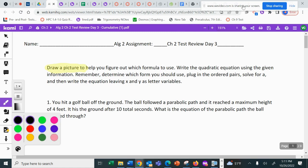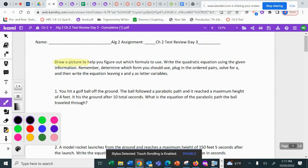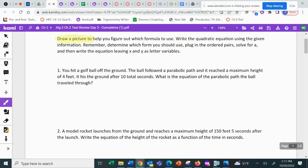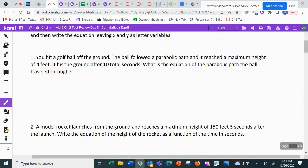So that's where I'm going to start. I'm going to get you started with some pictures. I'm not going to do all of these. I'm not going to work all the way through either. It's just to kind of get you started. So you hit a golf ball off the ground. The ball followed a parabolic path, and it reached a maximum height of four feet. It hits the ground after 10 total seconds.